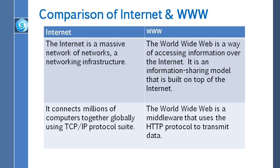Now let us do a comparison of the Internet and the World Wide Web. First, the Internet is a massive network of networks, a networking infrastructure. On the other hand, the World Wide Web is a way of accessing information over the Internet. It is an information sharing model that is built on top of the Internet.